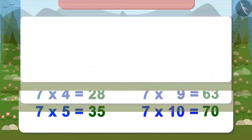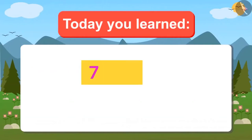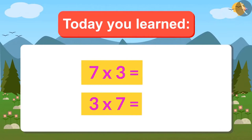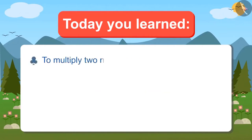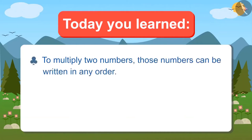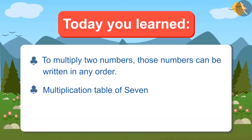Today you learned that whether you multiply 7 by 3 or 3 by 7, the answer will be 21. That means when two numbers have to be multiplied, they can be written in any order and the answer will be the same. We also learned the multiplication table of 7. Now write 7's multiplication table and memorize it by singing.